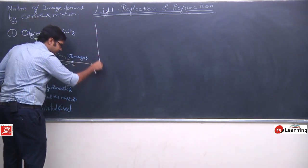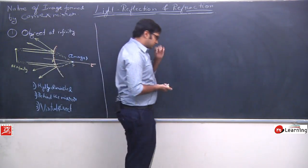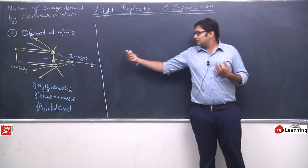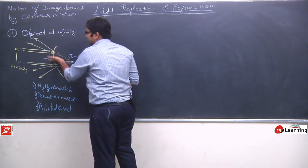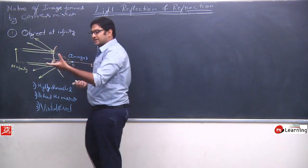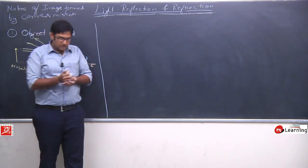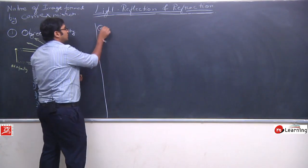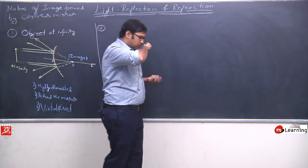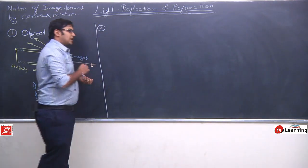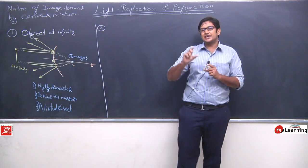Now let us move the object a little closer. As I said, in a convex mirror, the focus and center of curvature are always behind the mirror. So if I place the object anywhere in front, it doesn't matter what distance I place the object - the only difference is whether the distance is a finite distance or infinite. Infinite means very large - it doesn't mean actually unmeasurable, it means very large compared to the mirror.